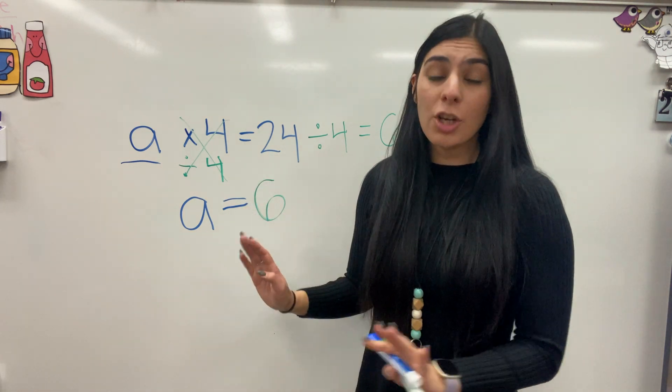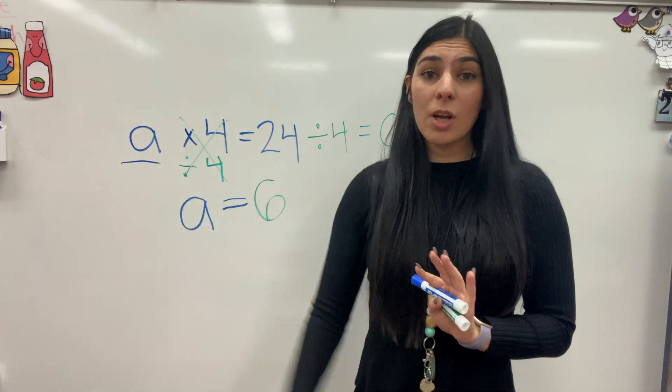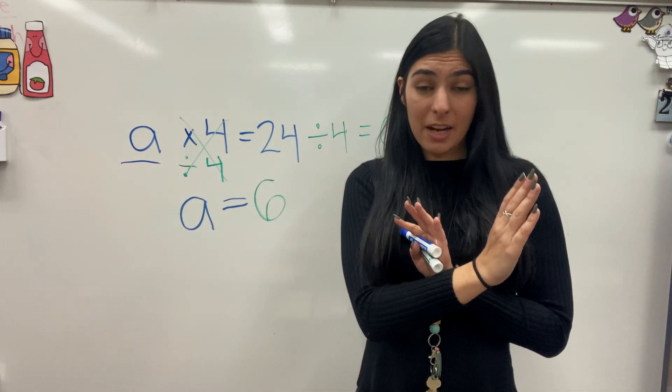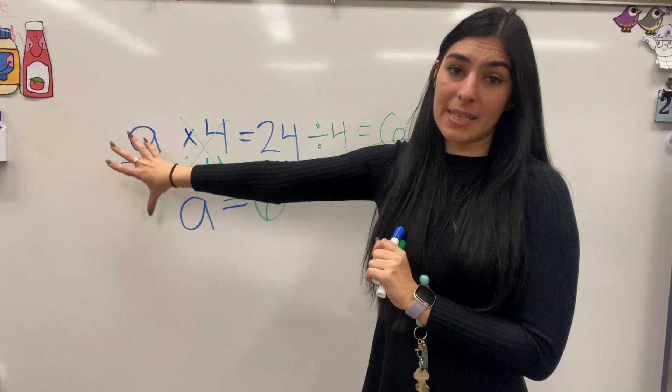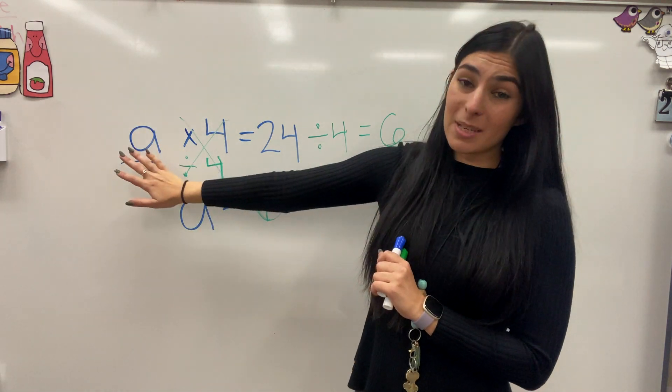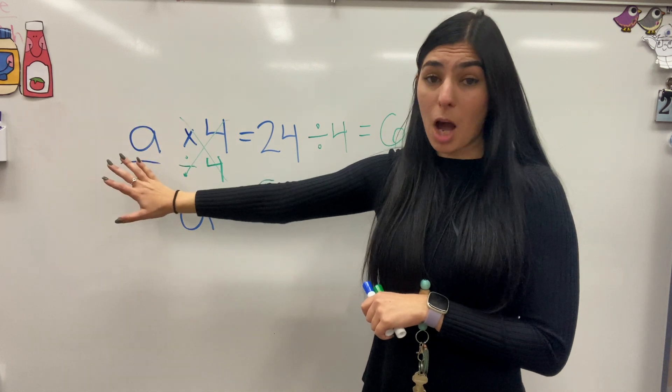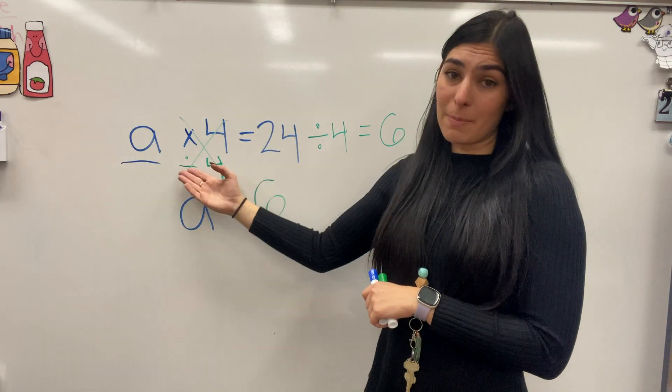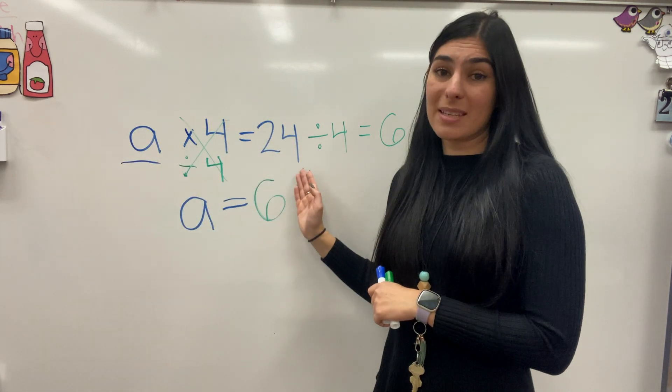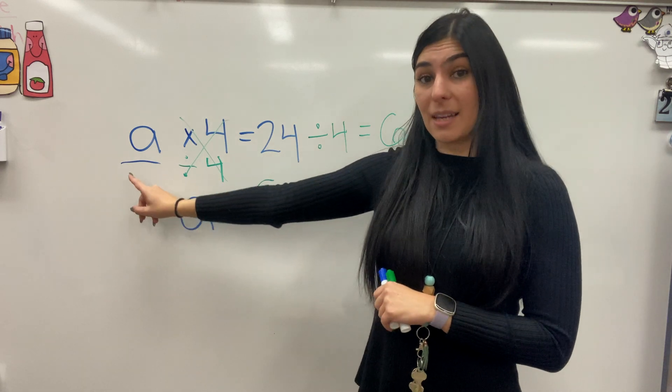So remember, anytime you have a missing factor, you can skip count one number till you get to the other number to find the missing factor. Or you can do the opposite. So if we're finding the missing factor for a multiplication sentence, I'm going to do the opposite, which means I'm going to divide by this side to cancel it out and divide by this side to find the answer of that missing factor.